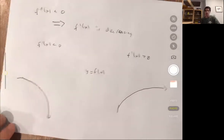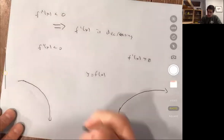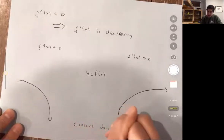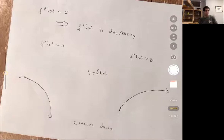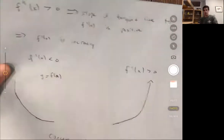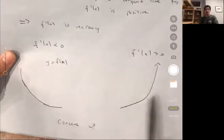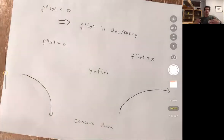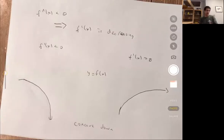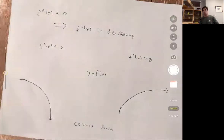The shape of a graph with second derivative less than zero looks like one of these two, and we call this concave down. If I were to pour water into one of these shapes, it would fall down — it would not be held up by the graph. Concave up holds the water; concave down lets it flow out. This is how you can think of the sign of the second derivative influencing the shape of the graph.